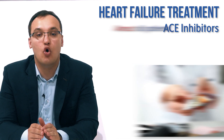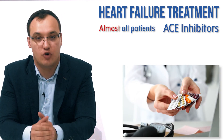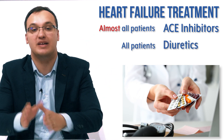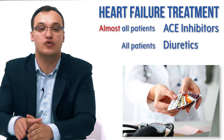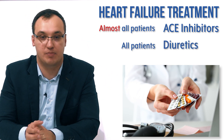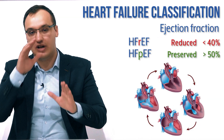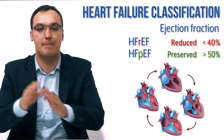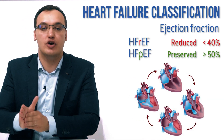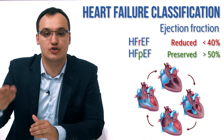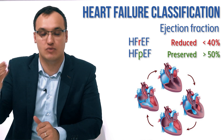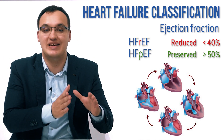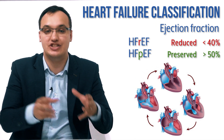We give ACE inhibitors to almost all patients with heart failure. Diuretics are used for all patients, but ACE inhibitors are used for almost all. Heart failure can be divided into reduced ejection fraction and preserved ejection fraction. Preserved is more than 50%, which is normal. Reduced is when we have less than 40% ejection fraction.